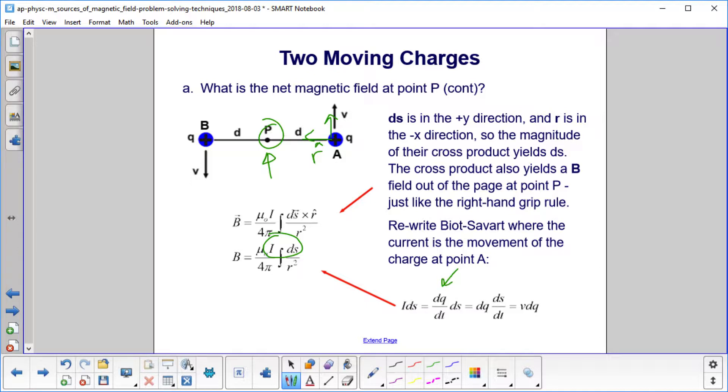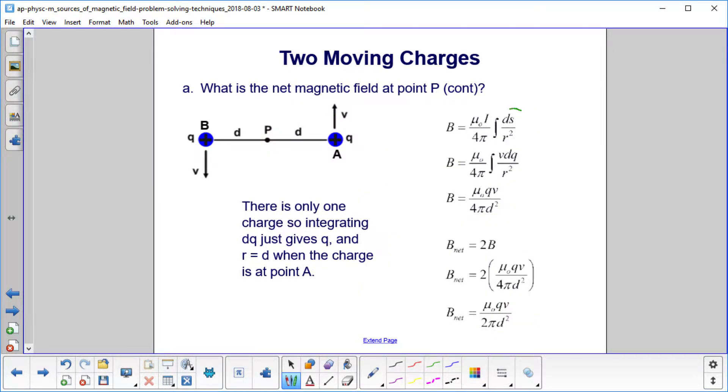So we have dQ dt dS. We move that around a little bit. We have dQ times dS dt. And what's another name for dS dt? Well, that's just velocity. So we have V dQ. So we go ahead and replace I dS with V dQ.